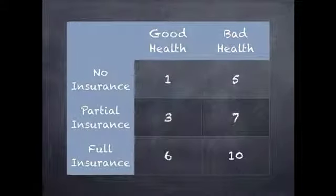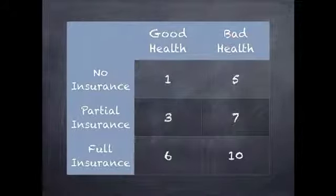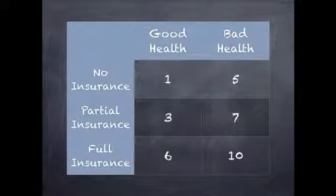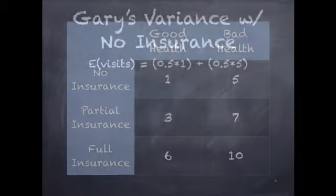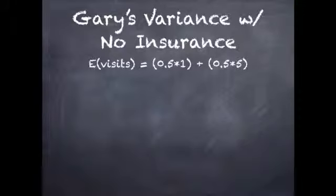This table summarizes the visits we discussed. With no insurance, Gary goes to the doctor once in good health and five times with bad health. With partial insurance, he goes three times in good health and seven times in bad health. When fully insured, Gary goes six times in good health and ten times in bad health. Now we want to examine the variance of Gary's healthcare costs under each scheme.